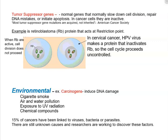There are also environmental factors that contribute to cancer: cigarette smoke, air and water pollution, exposure to UV radiation, and chemical compounds we consume. Anything that can induce DNA damage is called a carcinogen, and mutagens specifically mutate the DNA. About 15% of cancers have been linked to viruses, bacteria, or even parasites. Most causes of cancer are still not fully known, and researchers are actively working to discover these factors.